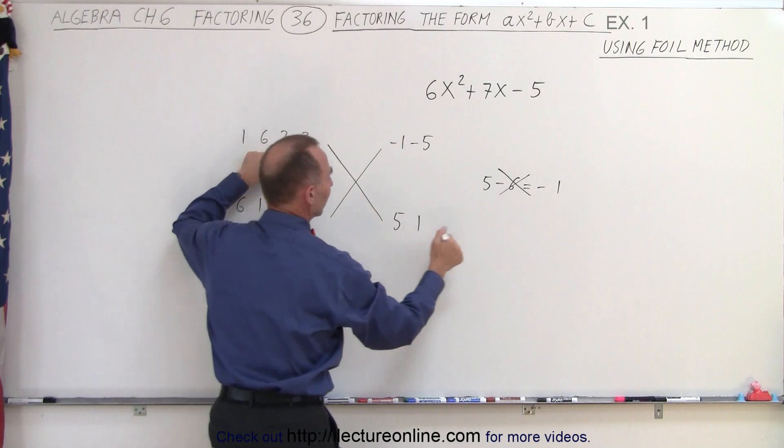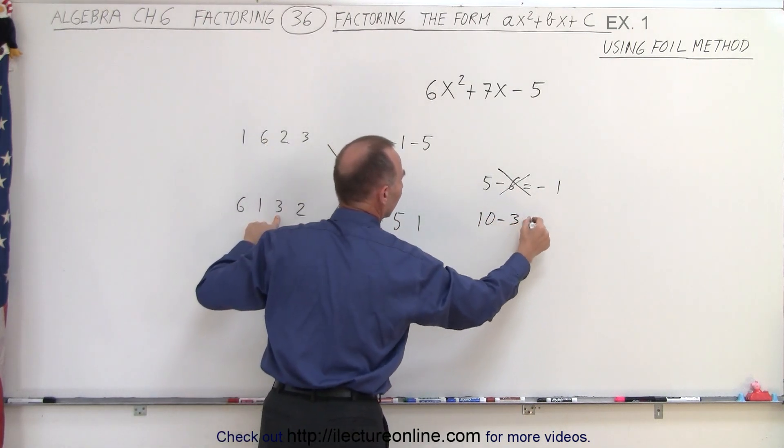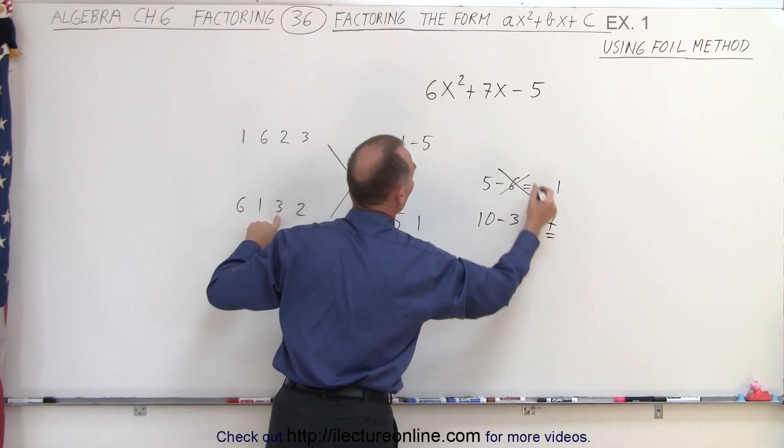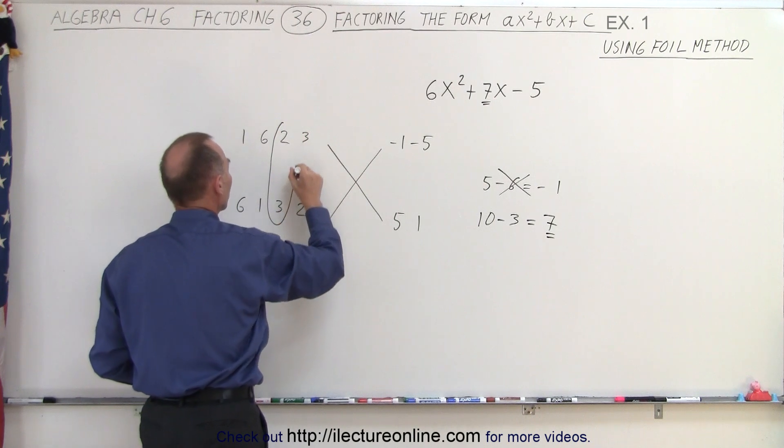How about the third set? 2 times 5, well, that's 10, and 3 times negative 1 is negative 3. I add that together, I get positive 7, which is the same as the middle term we have here. So bingo, we found the right combination.